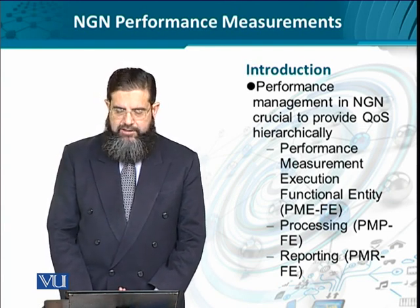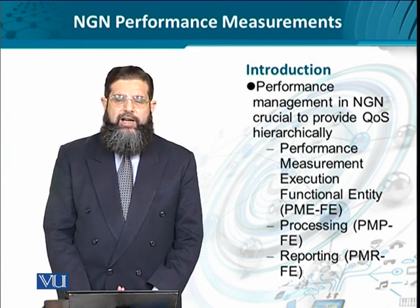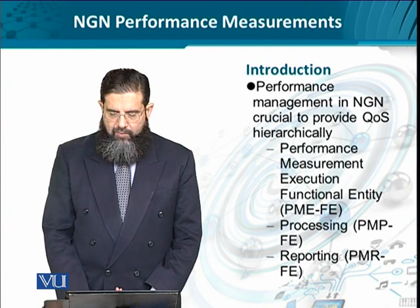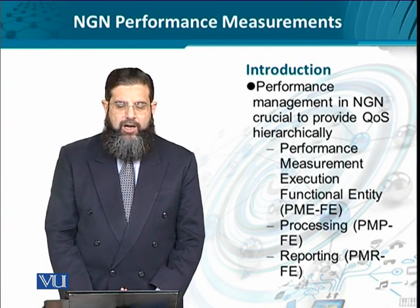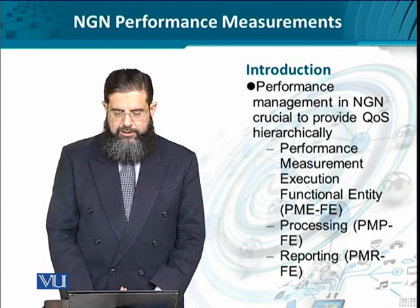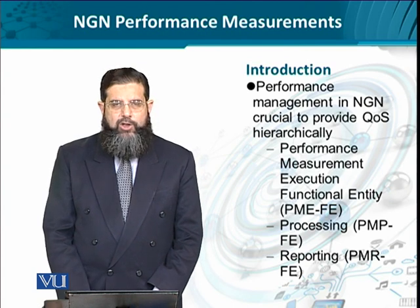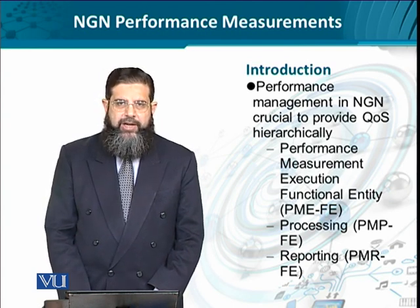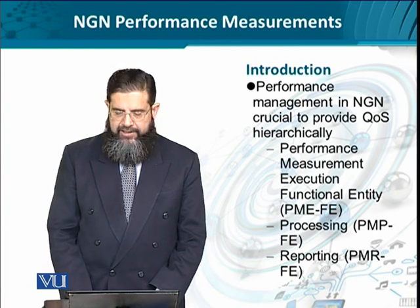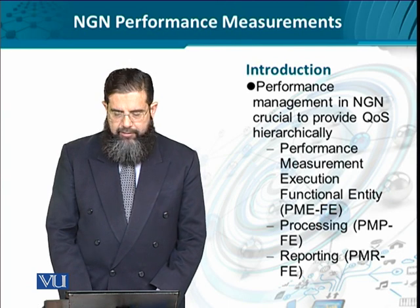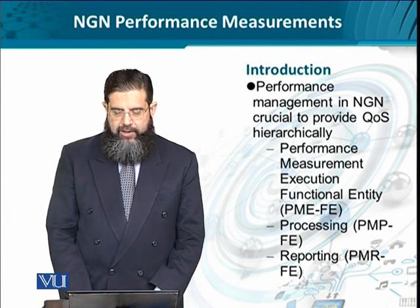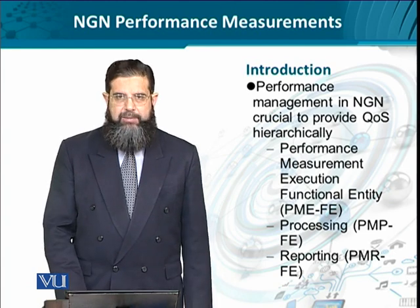There is a functional entity known as the Performance Measurement Execution functional entity (PME) — this is the entity that actually implements the performance measurement. Whatever measurements are made are sent to a processing server, which is another functional entity: the Performance Measurement Processing functional entity (PMP). Whatever is processed and the conclusions made are shared with network administrators and policy makers through a functional entity hierarchically at the top, known as the Performance Measurement Reporting functional entity (PMR). So we can think of the root node as PMR, with multiple PMPs beneath it, and PMEs at the leaf nodes.